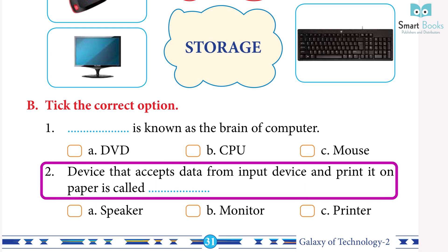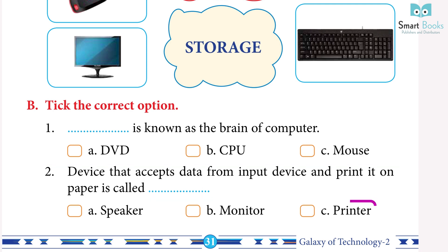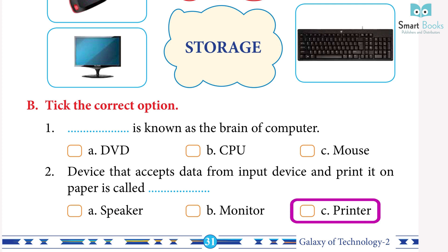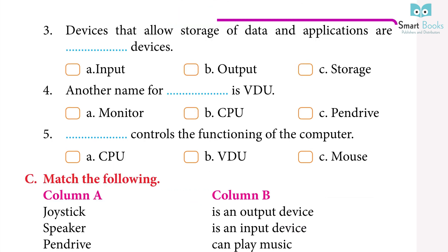Question 2: the device that accepts data from an input device and prints it on paper is called dash. A. Speaker, B. Monitor, C. Printer. Answer: C. Printer.